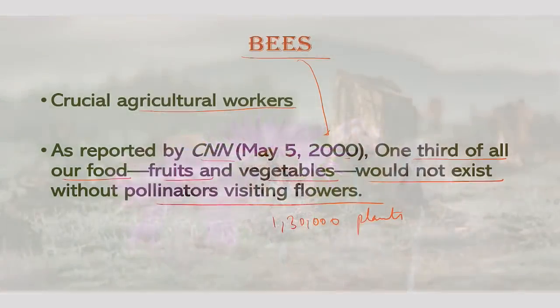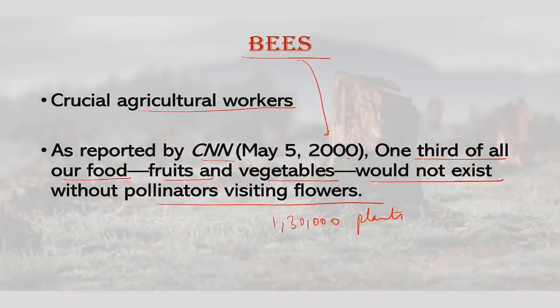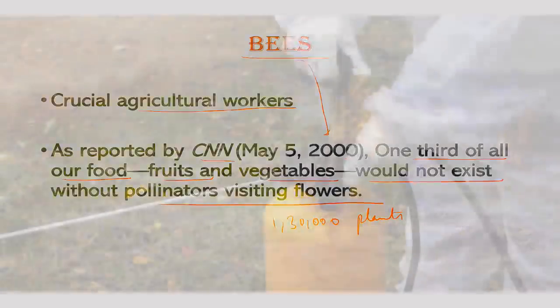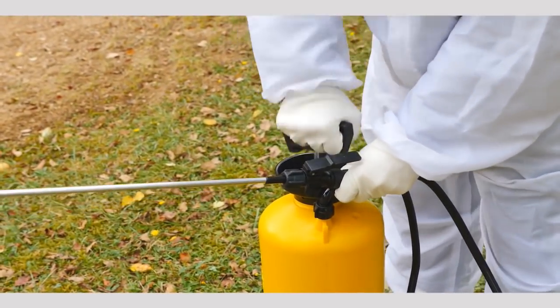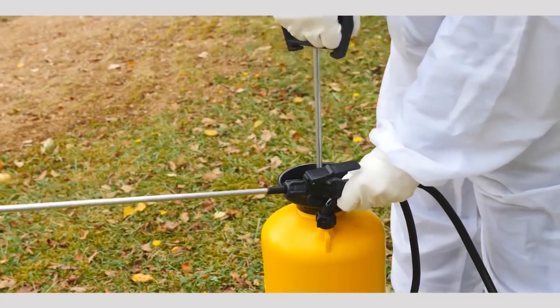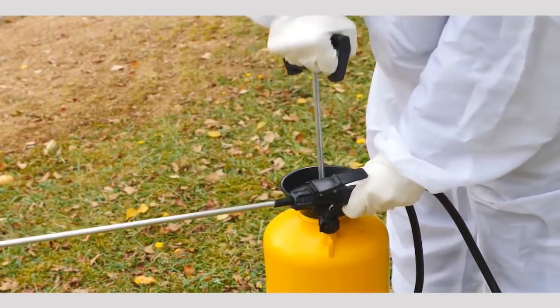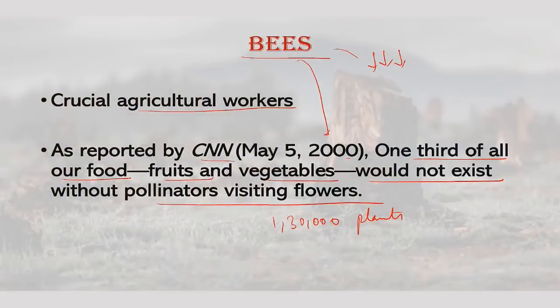Bees are more important than poultry in terms of human nutrition. Researchers are finding reasons for the massive decline hard to pinpoint, but suspect a combination of various diseases, environmental pollution, environmental degradation leading to less diversity for bees to feed from, and farming practices such as pesticides and large monocultural cropping. The population of bees is decreasing and it will impact the ecosystem overall.